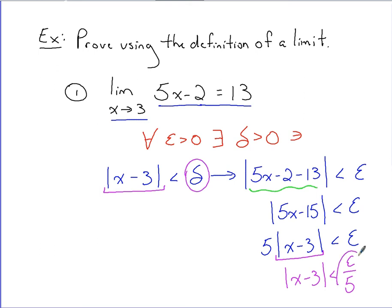This epsilon over 5, we can then compare back to that delta. So we sum things up with a little therefore statement. We say, therefore, let or choose a delta that is equal to epsilon over 5.